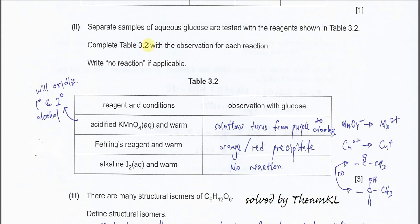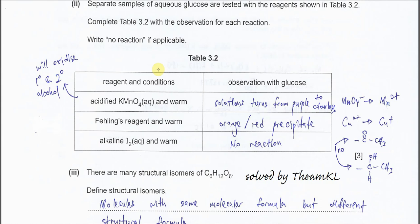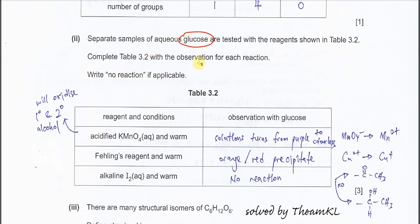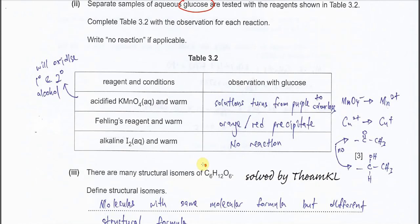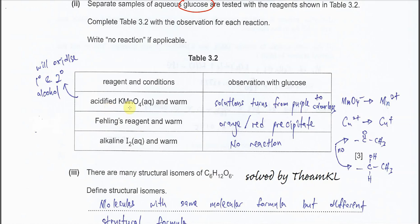Part E(ii): Separate samples of aqueous glucose are tested with reagents shown in table 3.2. Complete the table, writing 'no reaction' if applicable. The glucose sample has primary and secondary alcohol and an aldehyde group. The first reagent is acidified KMnO4 and warm. KMnO4 is an oxidizing agent. It will oxidize primary and secondary alcohols. After it oxidizes the alcohol, it gets reduced from positive 7 to positive 2, which is colorless. So the solution turns from purple to colorless, from MnO4− to Mn2+.